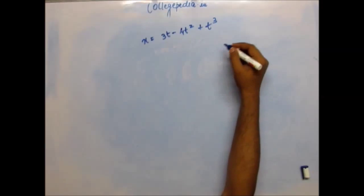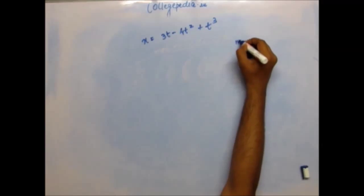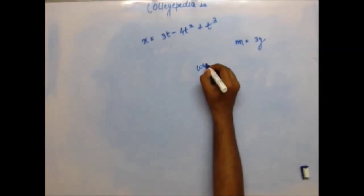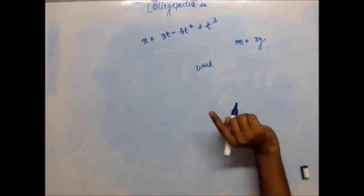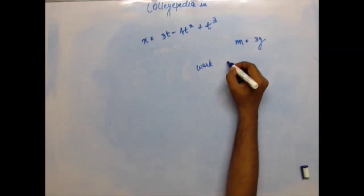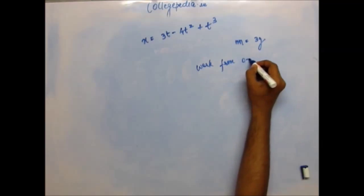The body whose equation this is has a mass of 3 grams. So the question is, you have to find the work done by the force which is causing this displacement in the first 4 seconds of the motion, from 0 to 4 seconds.